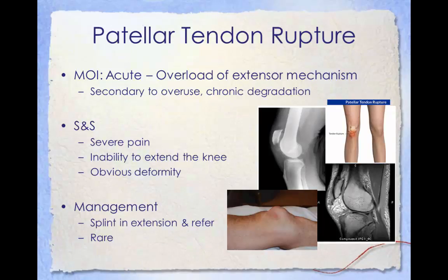The telltale sign of a ruptured patella tendon is movement of the patella further up into the quadriceps. When the rupture occurs, the patella loses support from the tibia and moves towards the hip when the quadriceps muscle contracts, which hinders the leg's ability to extend. Those affected cannot stand, as their knee buckles and gives way. Patella tendon ruptures are common as a secondary injury after chronic inflammation such as patellar tendonitis has created damage and degradation of the tendon. Signs and symptoms include severe pain, inability to extend the knee, and obvious deformity. Management should include splinting in extension if possible and referring to a physician.